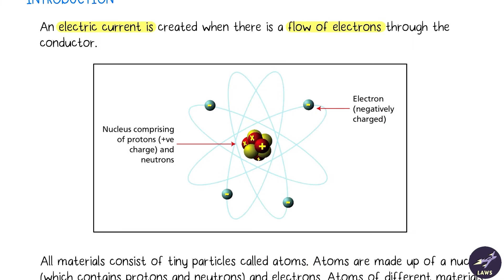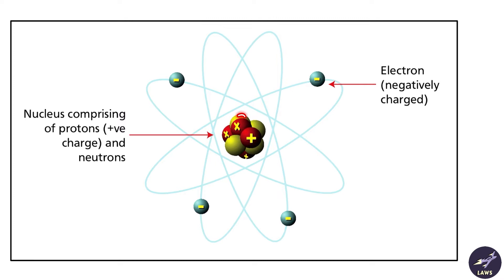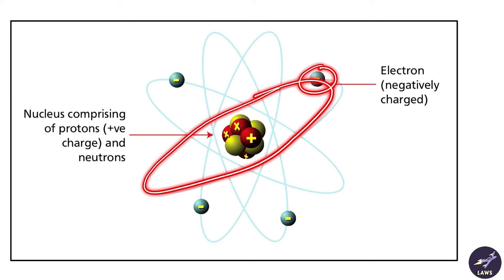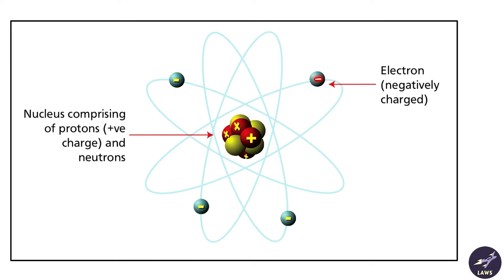Electricity or electric current is just the flow of electrons through the conductor. If we look at an atom, it has a nucleus with positively charged protons and neutrally charged neutrons, and we have electrons orbiting around it. Electrons are negatively charged. When the number of protons and electrons in an atom are equal, we say the atom is electrically neutral.